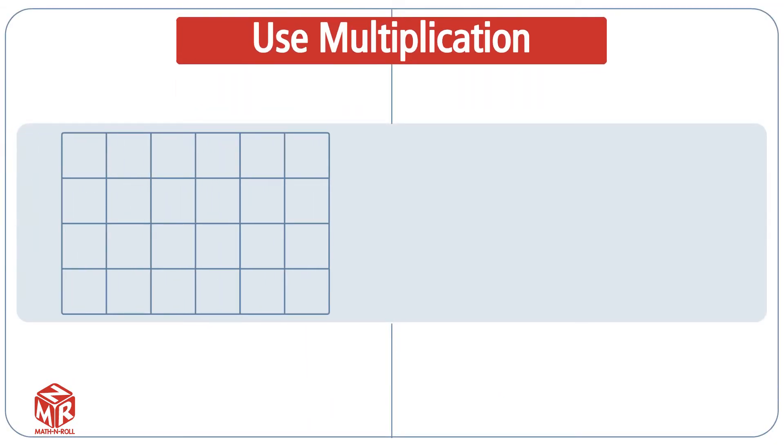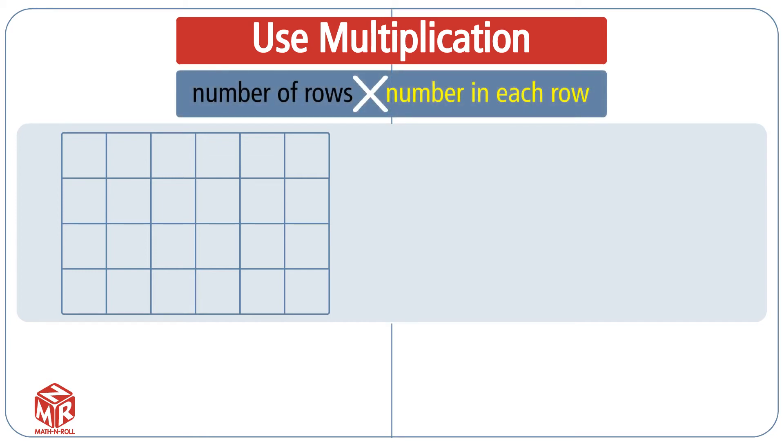The third method of finding the area is using multiplication. Rectangles are like arrays. To find the total number of squares in arrays, we use multiplication. We multiply the number of rows times the number in each row.